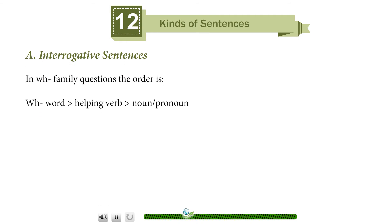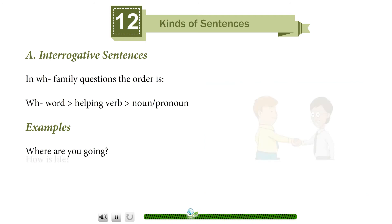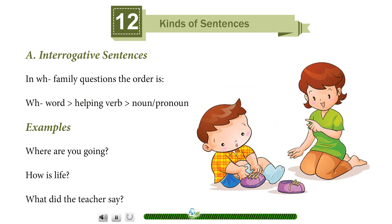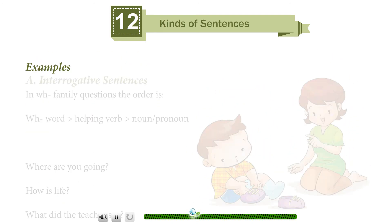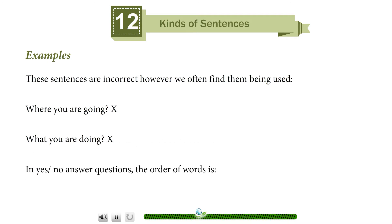In wh-family interrogative sentences, the order is: wh-word, helping verb, noun or pronoun. Examples: 'Where are you going?' 'How is life?' 'What did the teacher say?' However, these sentences are incorrect, though we often find them being used: 'Where are you going?' and 'What you are doing?' — the second lacks correct inversion.